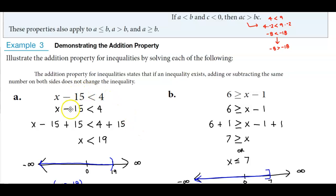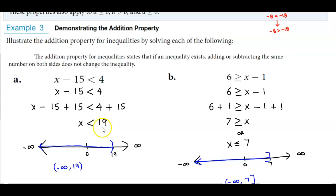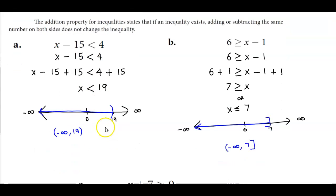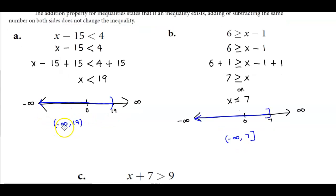For part a, we can add 15 to both sides. When we add 15 to both sides, we get x isolated on the left side. 4 plus 15 is 19, so x is less than 19. We plot 19 on our graph, and since x is less than 19, we go towards negative infinity. Our interval notation is negative infinity to 19.